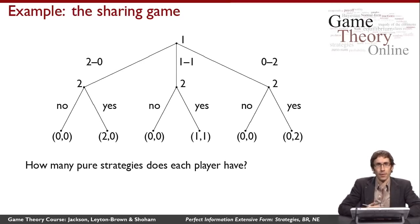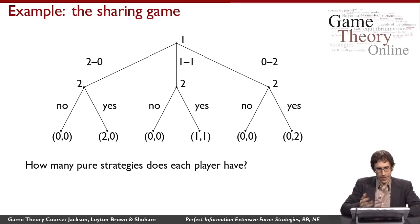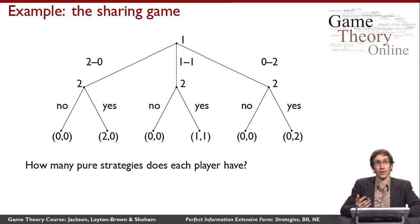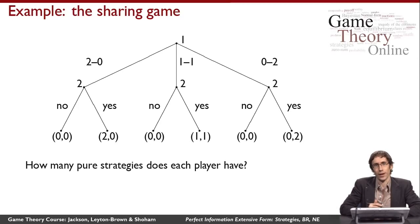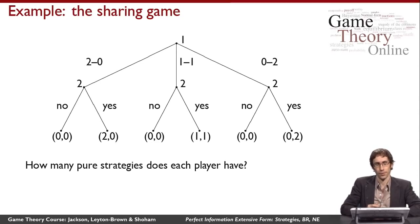In a normal form game, it was easy to talk about pure strategies — pure strategies were just actions. But in an extensive form game, there are multiple places where players get to choose different actions, and so strategies are going to need to be something a little bit more complicated. Think about how many pure strategies each player has in this game.